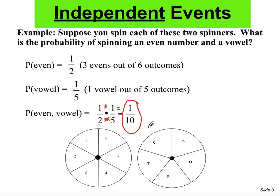So if you repeat that ten times, there is a tendency that you will get one chance of getting an even number on one spinner and a vowel letter on the other. So the arrow lands here and the arrow lands here — that will happen only once out of ten tries. That is the theoretical probability for that.